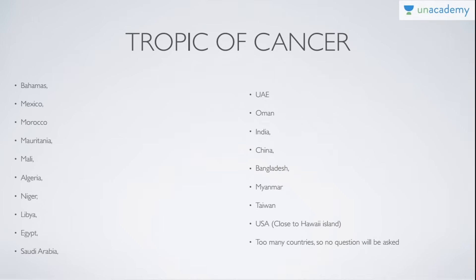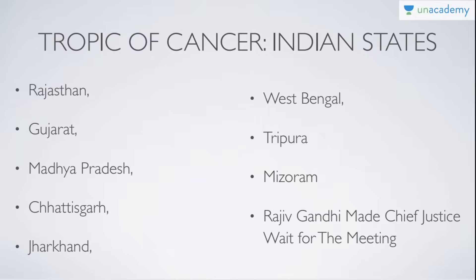The Indian states crossed by the Tropic of Cancer are: Rajasthan, Gujarat, Madhya Pradesh, Chhattisgarh, Jharkhand, West Bengal, Tripura, and Mizoram. The mnemonic is: 'Rajiv Gandhi Made Chief Justice Wait For The Meeting.' R for Rajasthan, G for Gujarat, M for Madhya Pradesh, C for Chhattisgarh, J for Jharkhand, W for West Bengal, T for Tripura, and M for Mizoram.